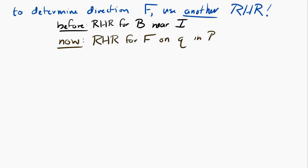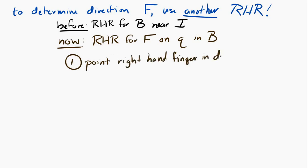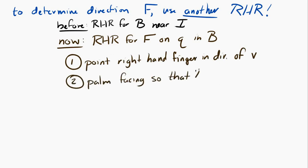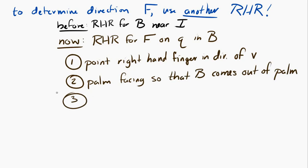To use this right-hand rule, point the right-hand fingers in the direction of the velocity. Then face your palm so that the magnetic field is coming out of your palm. If you do that and hold your thumb at right angles to your hand, the thumb will point in the direction of the force on a positive charge.